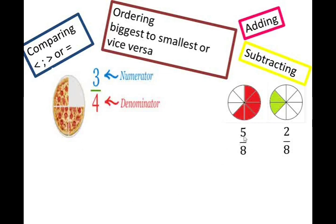In a case where our denominators are the same, we simply concentrate on the numerator. Here the numerator is 5 and on the second fraction the numerator is 2. If I look at 5 eighths, you can see a bigger portion is colored in, and 2 eighths has a very small portion colored in. So by looking at the diagram, you can see that 5 eighths is a bigger fraction — 5 eighths is greater than 2 eighths. In our exams, we look at the numerator: 5 and 2. Since 5 is a bigger number than 2, and our denominators are the same, 5 eighths is greater than 2 eighths. We concentrate on the numerator only after our denominators are both the same.